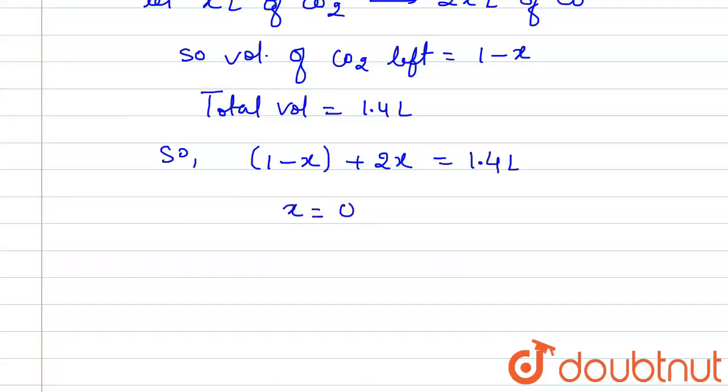x will be 0.4 liter. So as we have taken CO that equals 2x, so this will be equal to 2 times 0.4 equals 0.8 liter. So volume composition of CO is 0.8 liter.